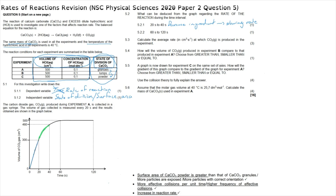Question 5.2.2 asks about the time interval 60 to 120 seconds. At 60 seconds the graph becomes a horizontal line — the volume of CO₂ produced reaches a maximum of 500 cm³ and does not change. This means the graph is now a straight line with zero gradient, and the meaning is that the reaction has stopped, or the reaction has reached completion, since no more product is being produced.